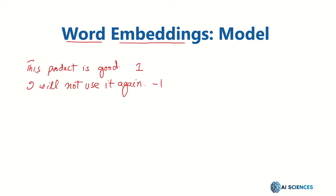So if we use word embeddings, what we will be doing is — and we may have several sentences and their corresponding labels as a training dataset — focusing on the first sentence, for example.